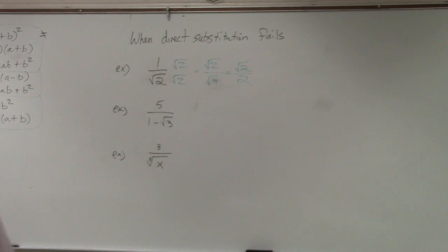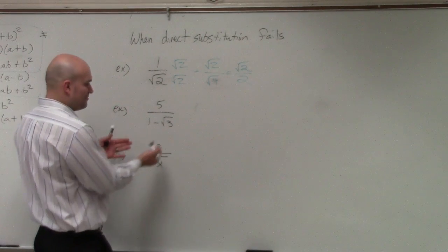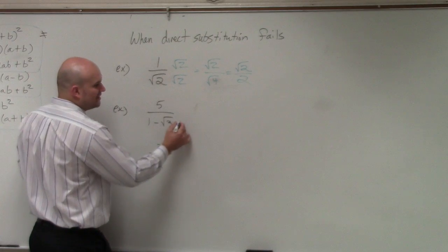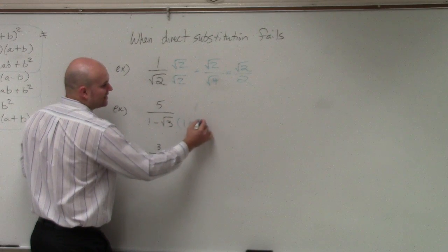Now we have to multiply by what we call the conjugate pair. So the exact same thing, but we can't just multiply by the square root of 3. Now we have to multiply by the conjugate.